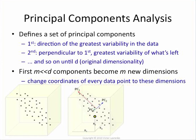So that's the idea of PCA: you look for the dimension with the greatest variance, then the one that's perpendicular but has the greatest remaining variance, and so forth. Once you come up with these dimensions, you change the coordinates of each data point so that each data point is expressed in the new set of dimensions.